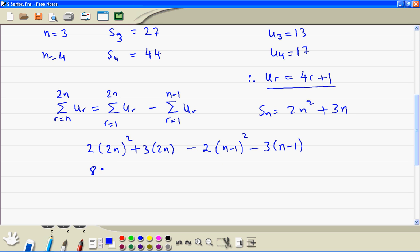So this gives us 8n squared plus 6n. Now obviously you have to expand this bracket, then times by minus 2, then we get us minus 2n squared plus 4n, then minus 2. Here we get minus 3n, then minus minus 1 plus is 3.